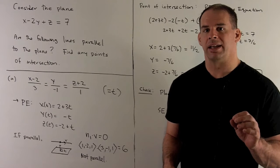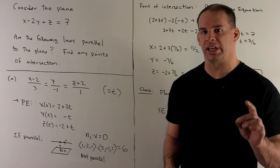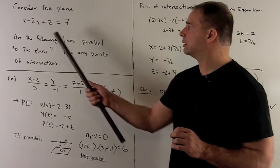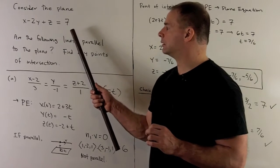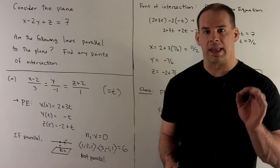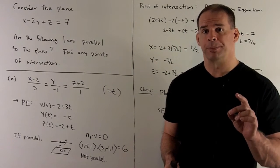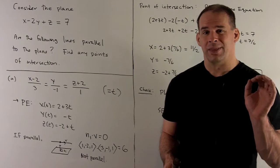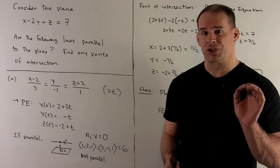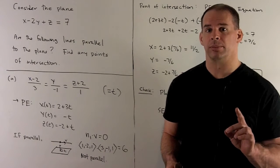Consider the plane x minus 2y plus z equals 7. Are the following lines parallel to our plane? Then determine points of intersection of the line and the plane.